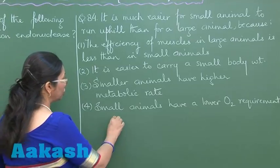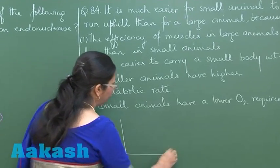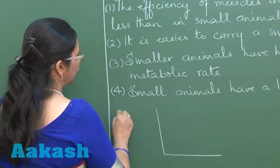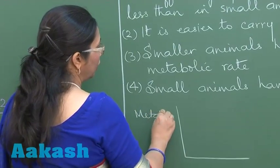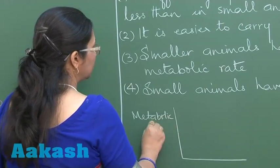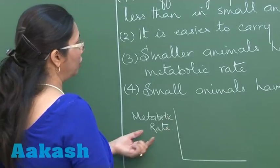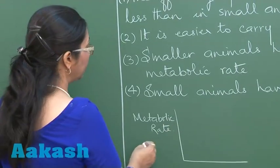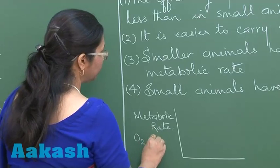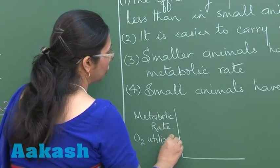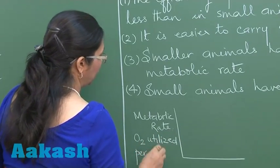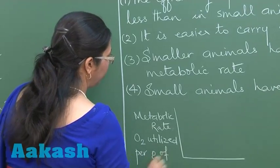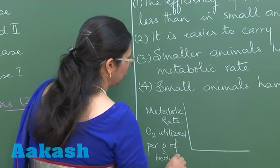If we plot this on a graph, we take metabolic rate on the y-axis, or in other words, the amount of oxygen utilized per gram of body weight, and body mass on the x-axis.